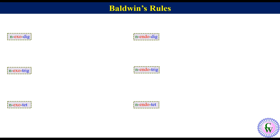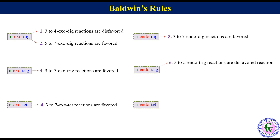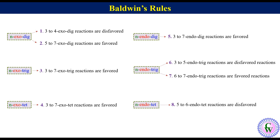Now, coming to Baldwin's Rules — these are all about the feasibility of the six cyclization reactions. The rules are: 3 to 4 exodig reactions are disfavored; 5 to 7 exodig reactions are favored; 3 to 7 exotrig reactions are favored; 3 to 7 exotet reactions are favored; 3 to 5 endotrig reactions are disfavored; 6 to 7 endotrig reactions are favored; and 5 to 6 endotet reactions are disfavored.